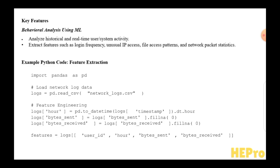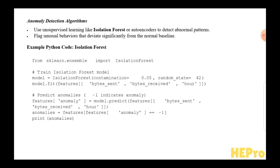The model detects anomalies in user activity to identify suspicious patterns that differ from normal behavior using machine learning. The Isolation Forest algorithm is applied to detect unusual network activities without needing labeled data. The model is trained on features like bytes sent, bytes received, and activity hours, with a small contamination rate to indicate expected anomalies. Once trained, it predicts anomalies with a value of -1, flagging potential threats. This approach is effective for detecting zero-day attacks, insider threats, or compromised accounts based on data deviations from the baseline.